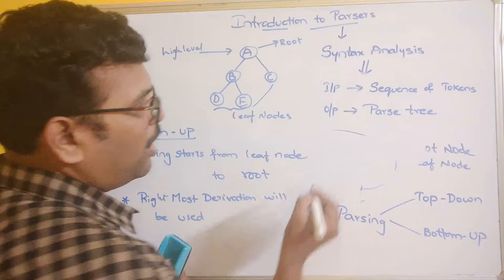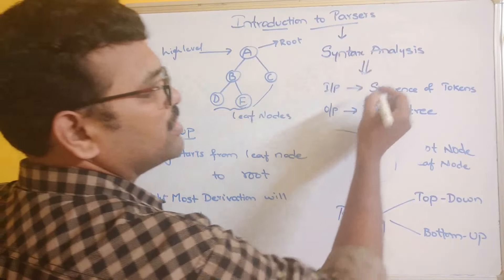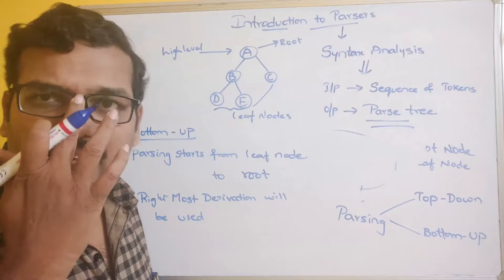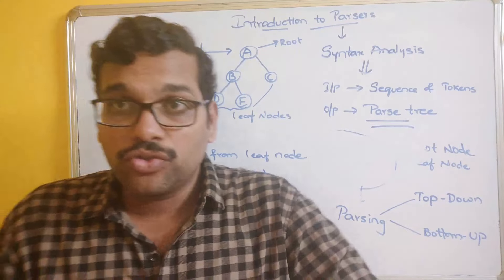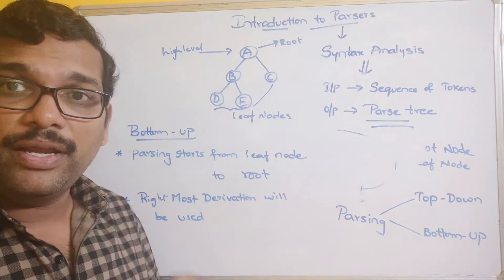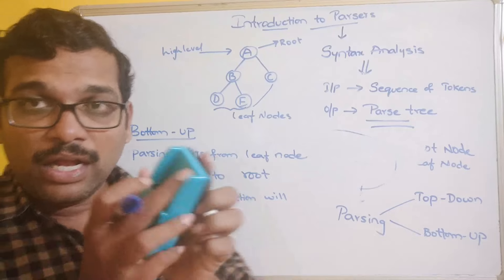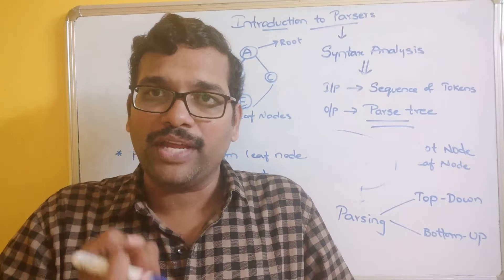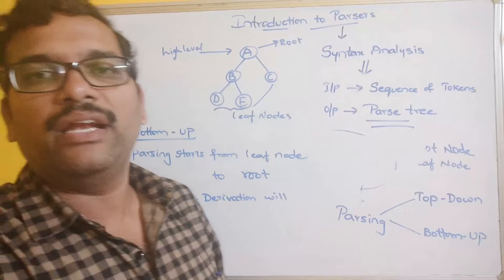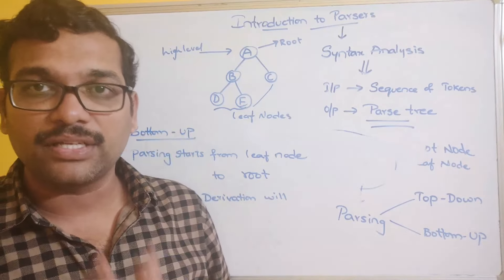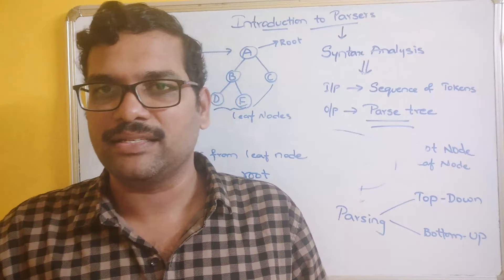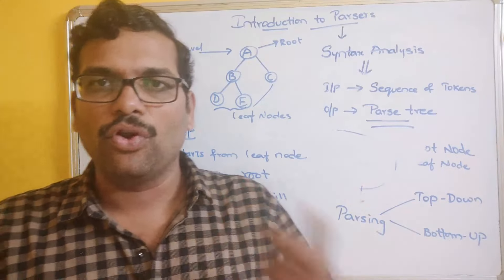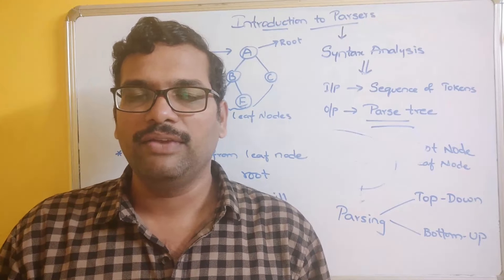This parse tree is the output of syntax analysis, which will be given as input to the next phase — that is, semantic analysis, the third phase. So far we have seen the first phase, the lexical analyzer. Now we are going to see the second phase. With the help of the sequence of tokens, we will understand how they are converted into the parse tree. Syntax analysis also checks whether the tokens are following the required syntax; if not, errors will be raised.